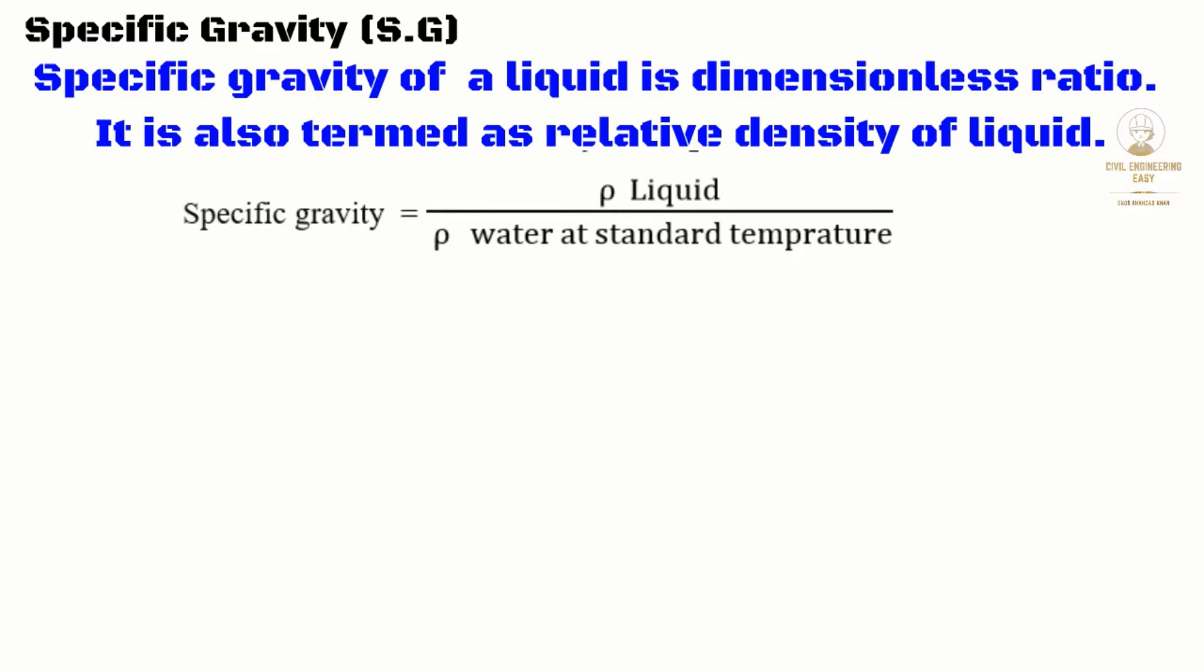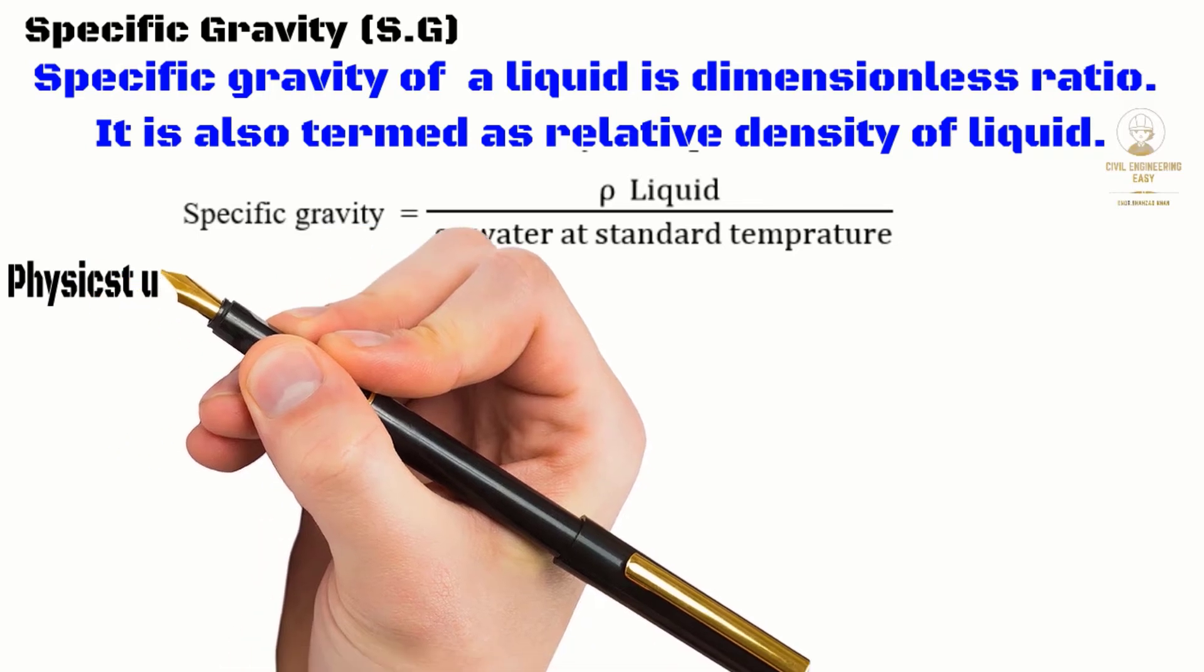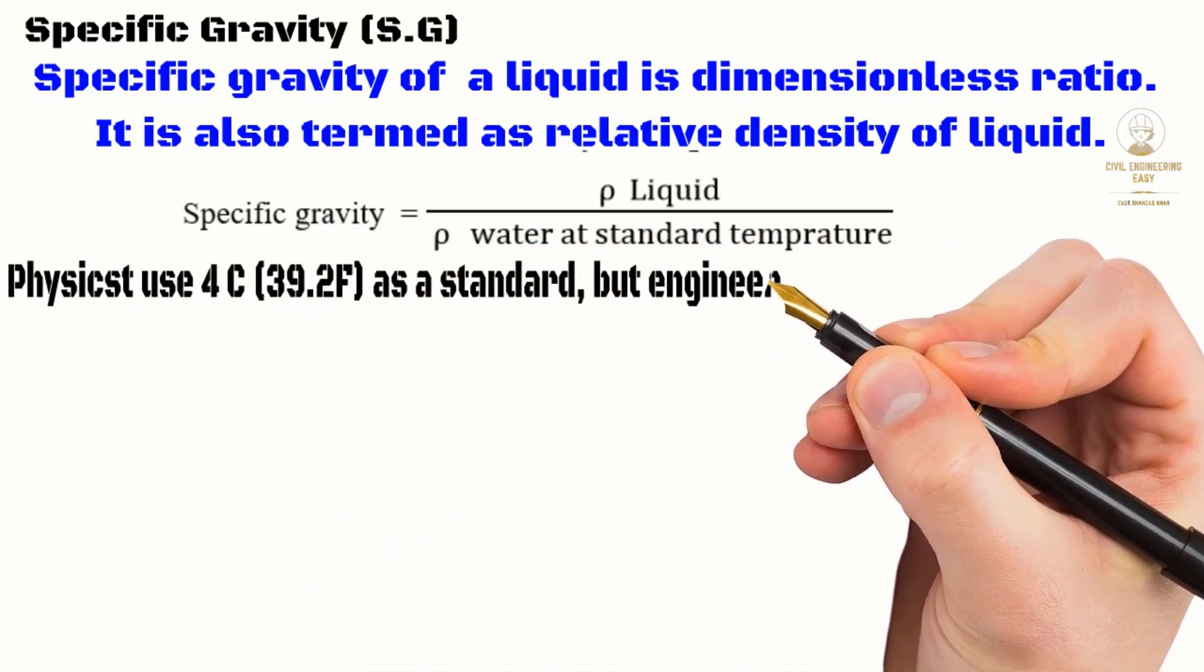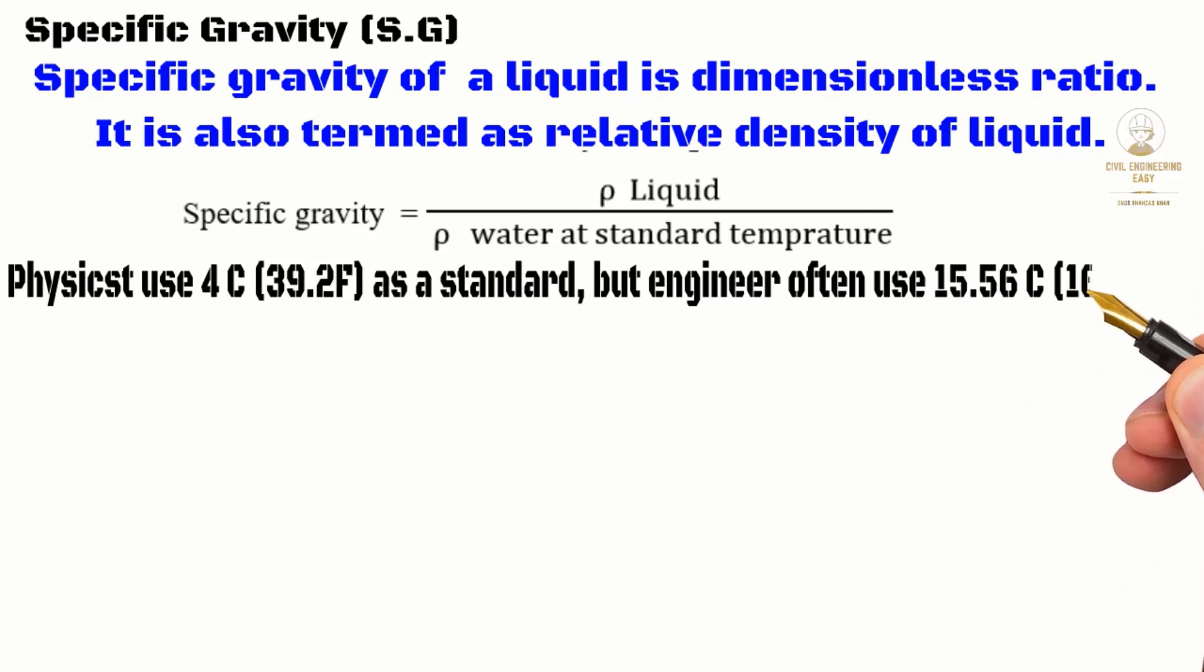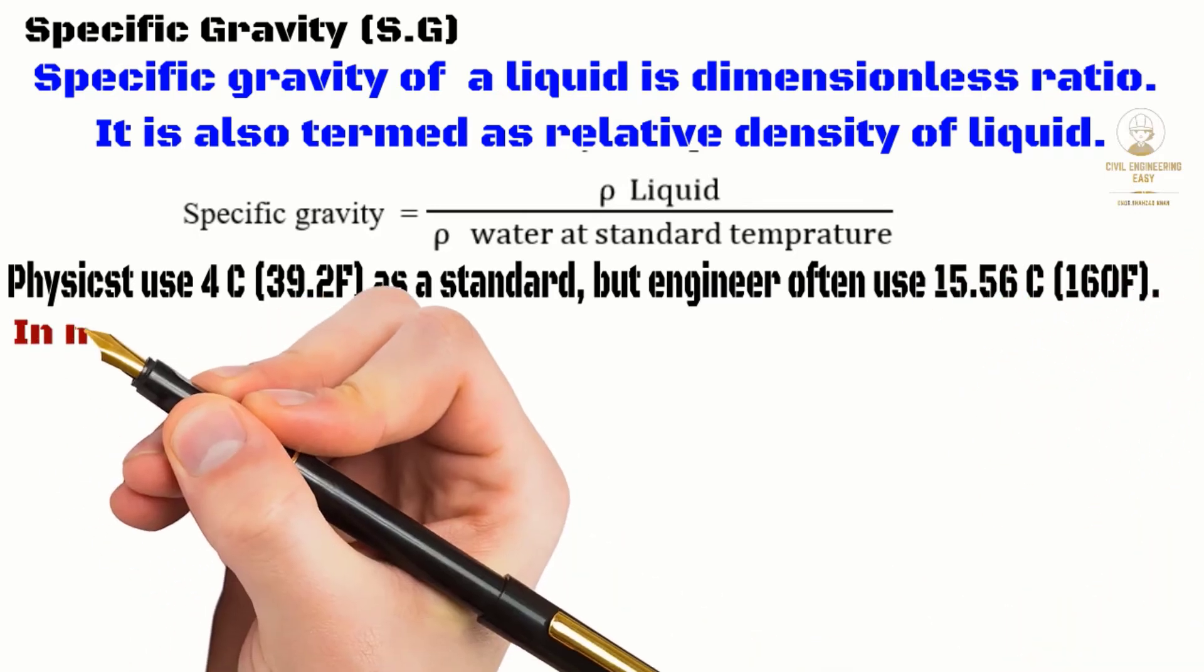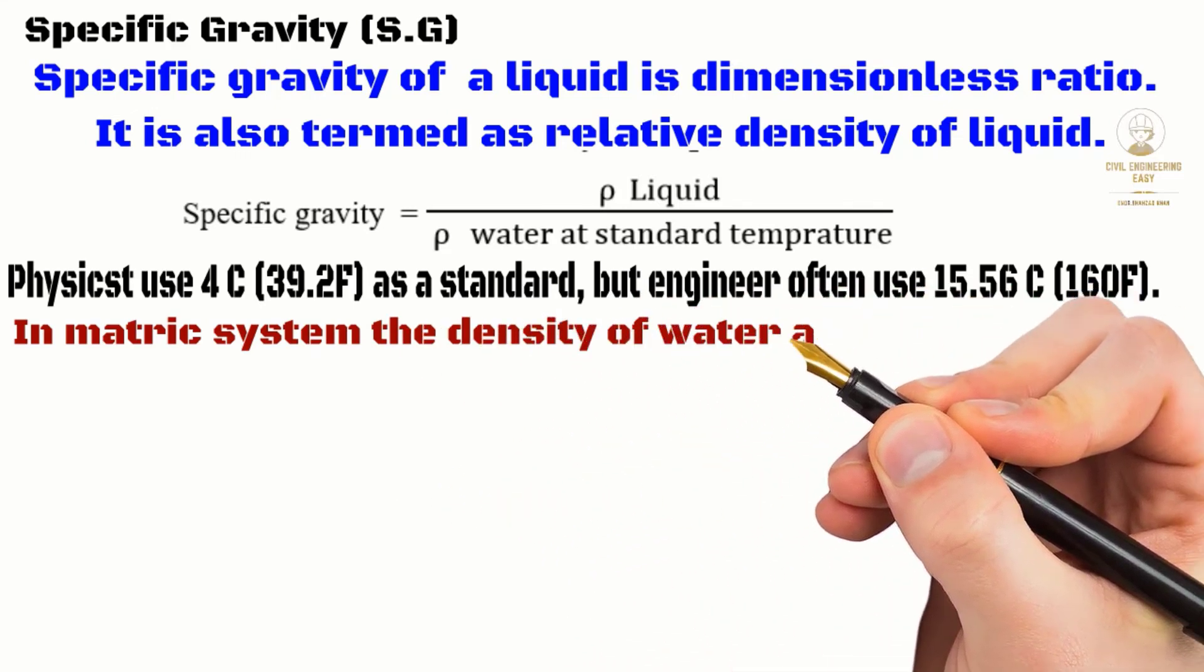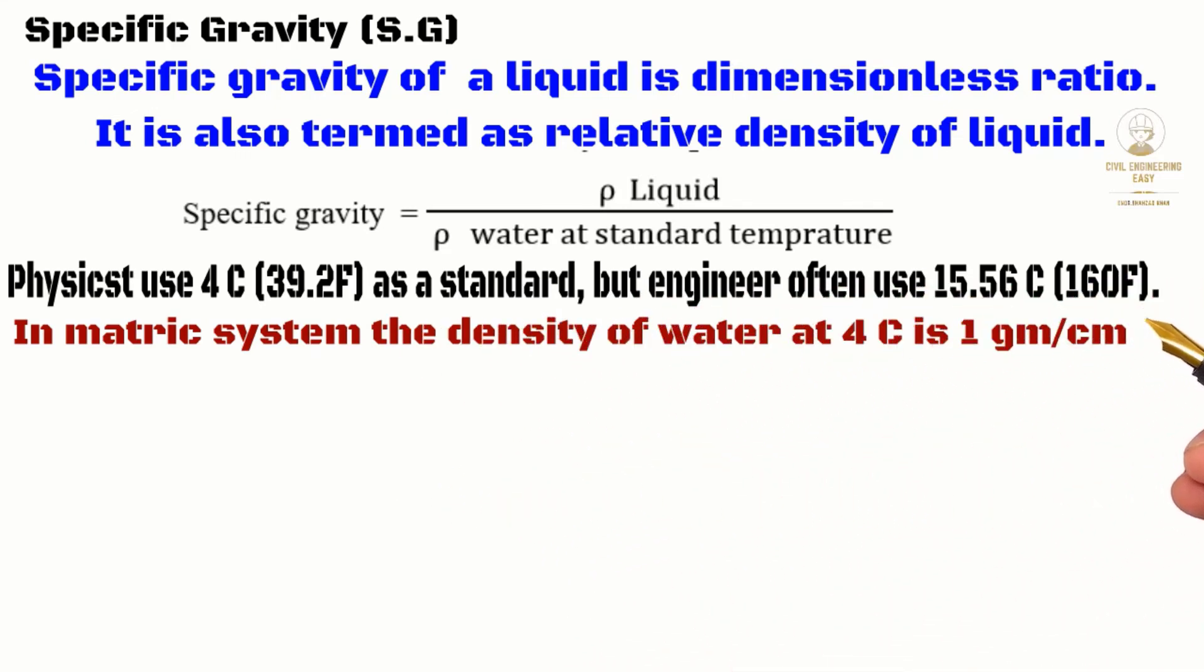Physicists use 4 degrees Celsius as a standard, but engineers often use 15.56 degrees Celsius. In the metric system, the density of water at 4°C is 1 gram per cubic centimeter, or 1 gram per milliliter, equivalent to 1000 kilograms per cubic meter.